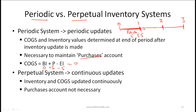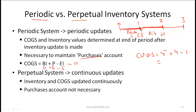In the next period, let's say purchases are $4,000 and ending inventory is $1,000. Notice that ending inventory for period one becomes the beginning inventory for the second period, so that's five. COGS for the second period equals five plus four minus one, which is nine minus one, giving COGS of eight. That's how the periodic system works.